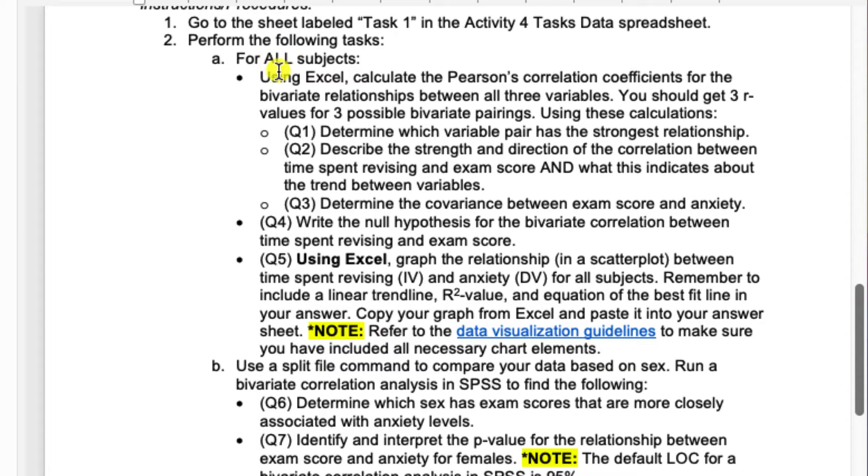For the all subjects analysis, you're going to use Excel to calculate the Pearson's correlation coefficients for the bivariate relationships between all three variables. So you should end up getting three R values for three possible bivariate pairings. So you'd have time spent revising with exam score, time spent revising with anxiety, and then exam score with anxiety.